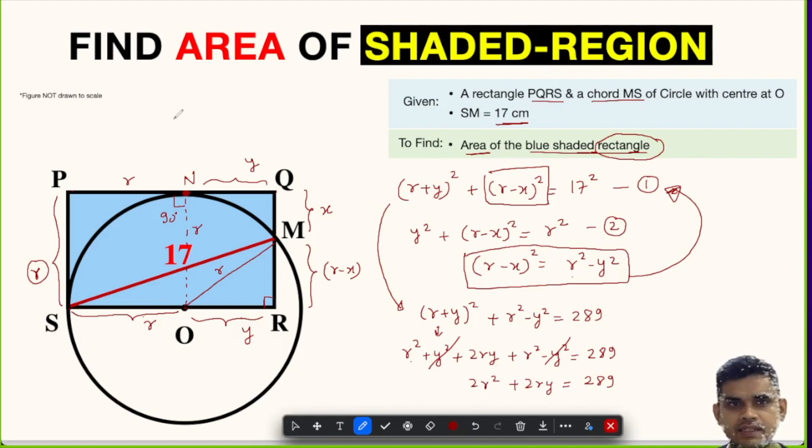We can take 2 common from the terms of the left-hand side. So let me rewrite here. So 2 times (R² + RY) = 289 divided by 2, which is equal to 144.5.